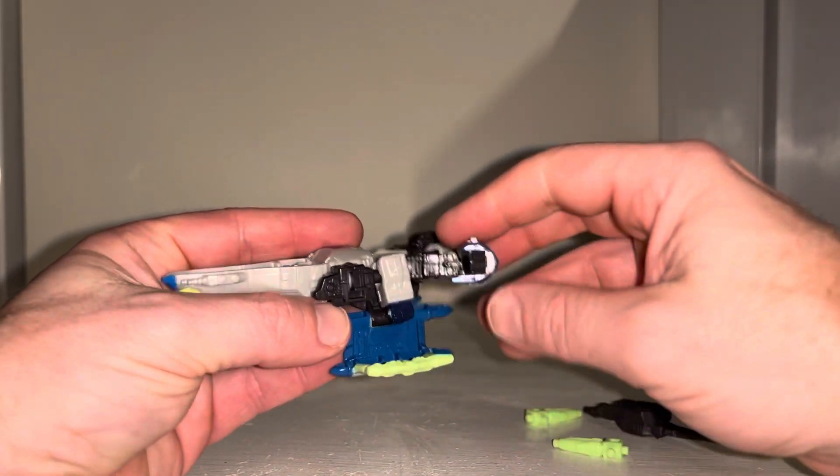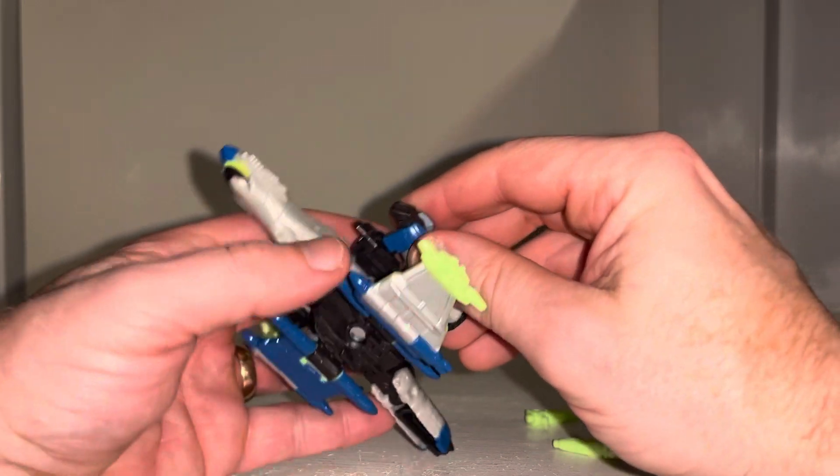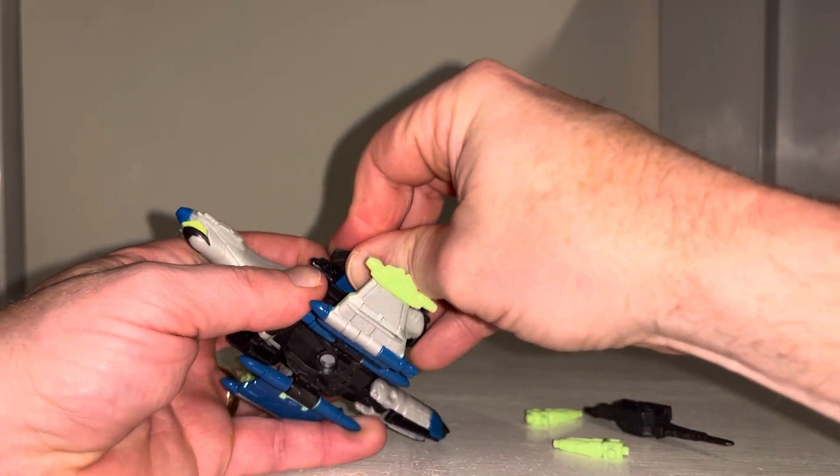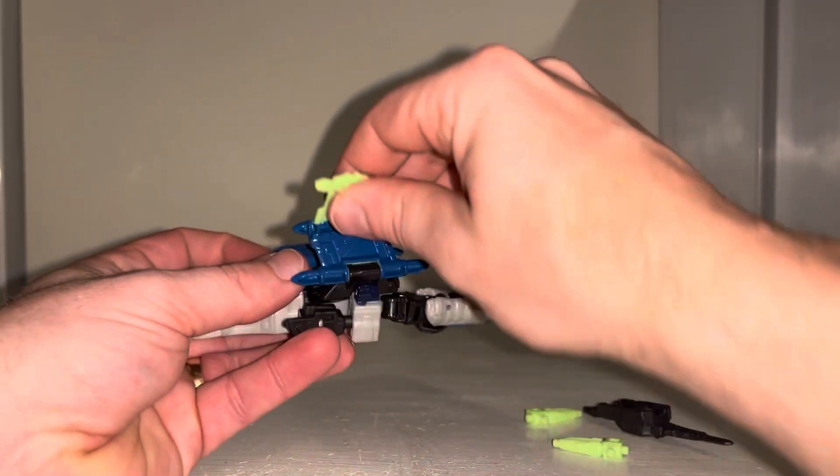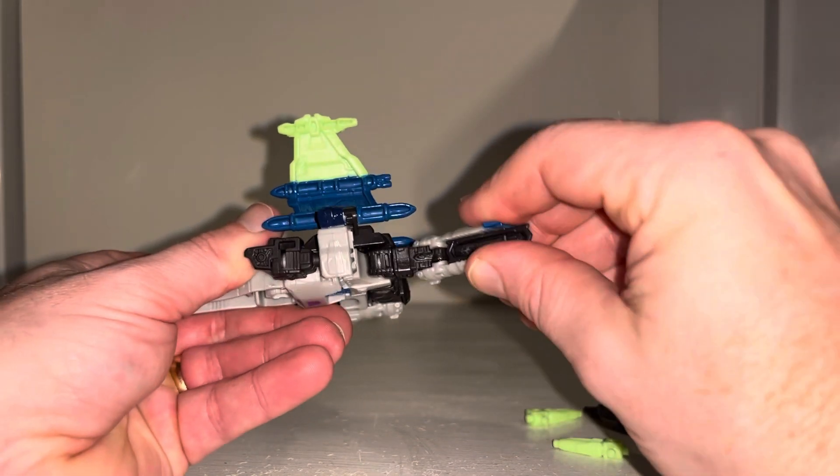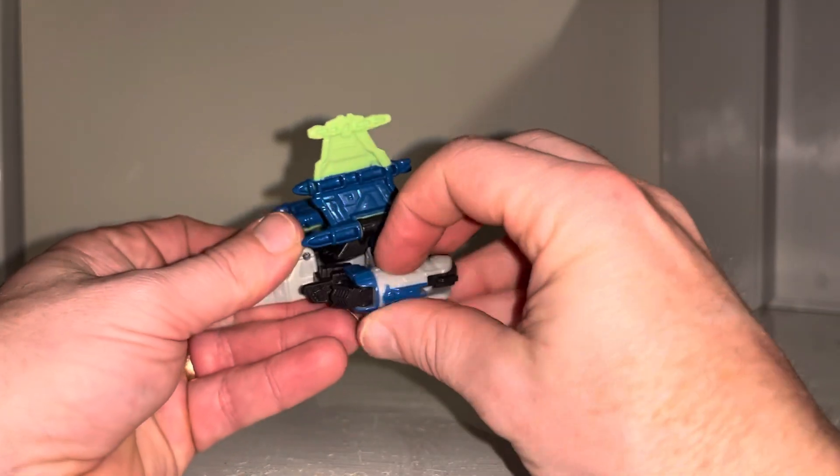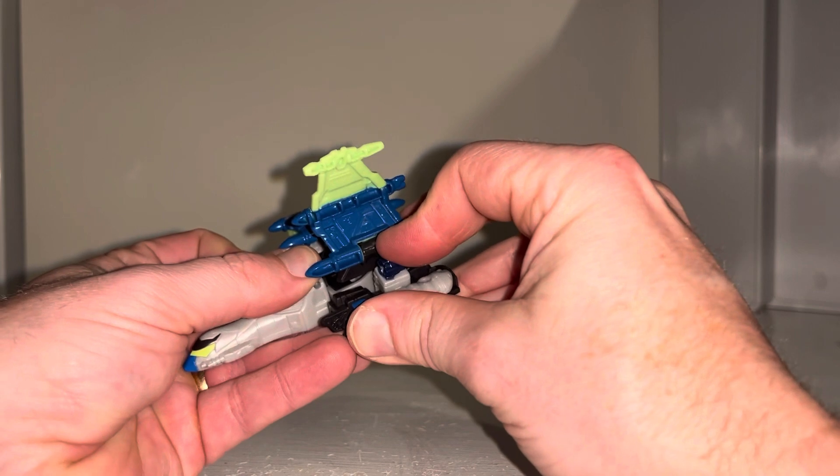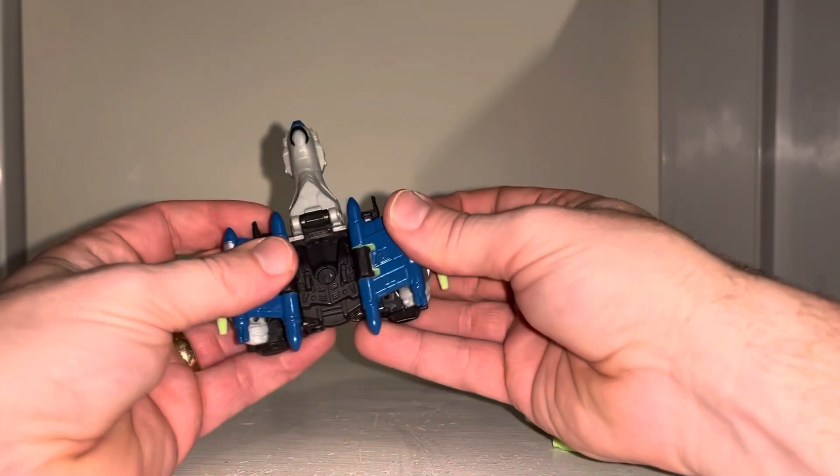There we go. Same process on this side - rotate at the hip, fold it over, and then tab this into there.